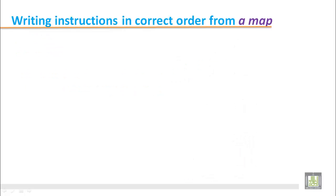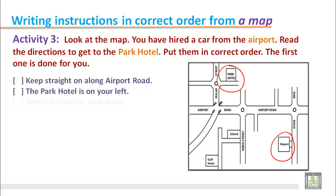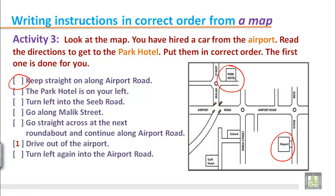Writing instructions in correct order from a map. Activity 3. Look at the map. You have hired a car from the airport. Read the directions to get to the Park Hotel and put them in correct order. The first one is done for you. These are the directions you can see, but they are not in the correct order. You will have to put the number in the brackets. The first one is done for you.